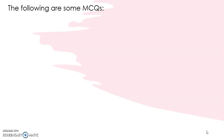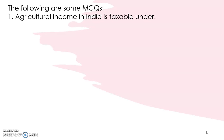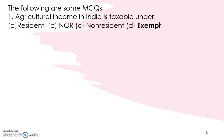The first MCQ question: agricultural income in India is taxable under — options are resident, not ordinarily resident, non-resident, or exempt. The correct answer is exempt. Agricultural income is totally exempt from tax according to Section 10(2A). The conditions are: the land must be situated in India, the land must be used for agricultural purposes, and the assessee should have interest on that land. If these conditions are fulfilled, agricultural income is totally exempted.